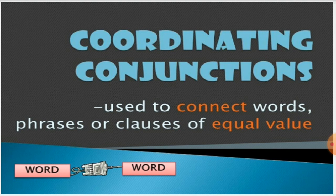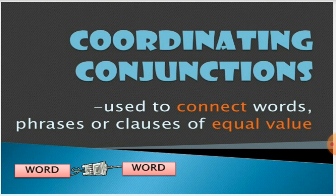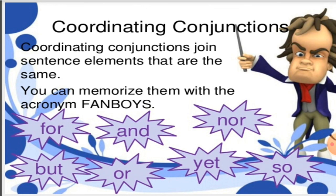Now let us see what coordinating conjunctions are. These are used to connect words, phrases, or clauses of equal value. When I say equal value, I mean independent clauses. When we take the independent clauses alone, they make complete sense. So coordinating conjunctions are the joining words used to connect words, phrases, or clauses which are independent.